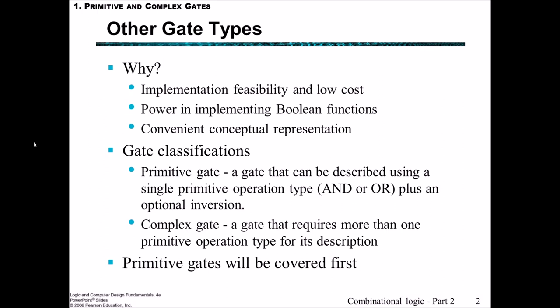So there are other gate types that we haven't had a look at before, and the question would be well why would we use them? The reason is that implementation can become more feasible and it can lower the cost. It also can be a powerful way to implement the boolean functions and it provides a convenient conceptual representation. For our purposes we're going to classify gates in two groups: one being primitive gates and the other being complex gates. A primitive gate is something that can be described using a single primitive operation type which is AND or OR plus some sort of optional inversion. A complex gate requires more than one primitive operation type for its description. First of all we'll go over the primitive gates.